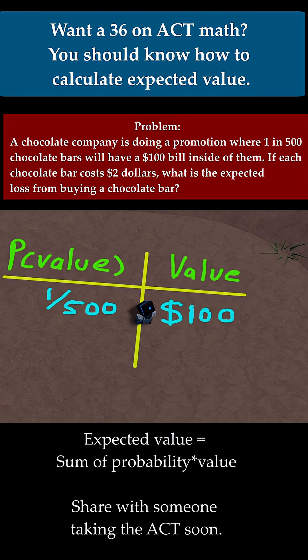Now, there's another value that you need to think of. It says that each chocolate bar costs $2, right? And to get this $100 bill, you'd have to buy a $2 chocolate bar. And if you're buying that chocolate bar, that's minus $2, because we're losing $2 to buy this chocolate bar.